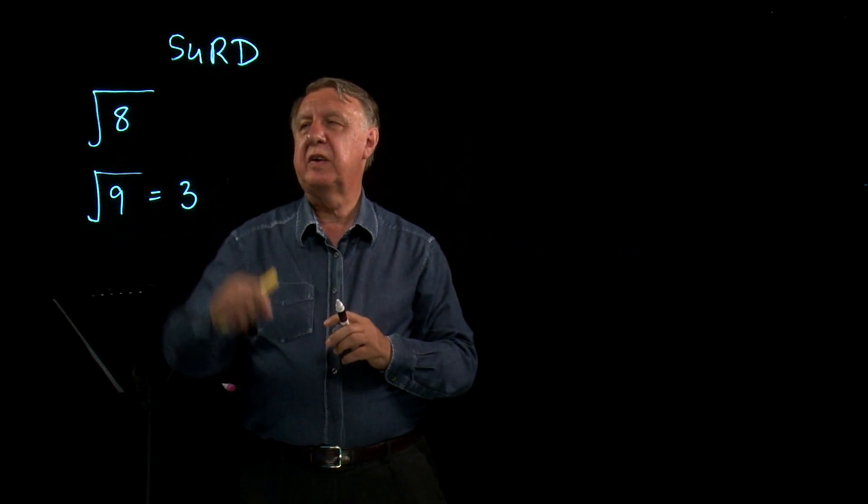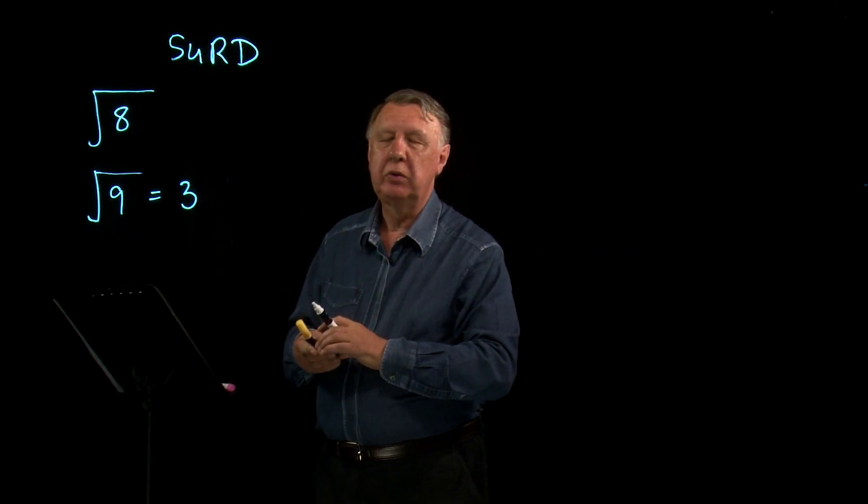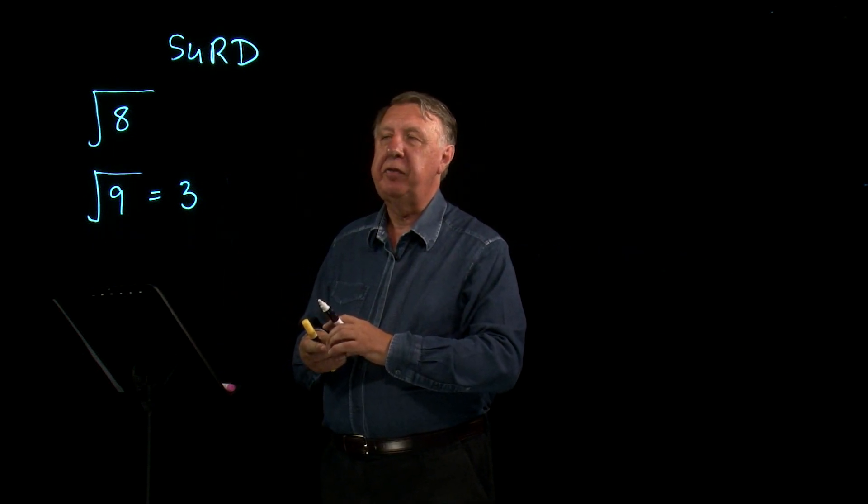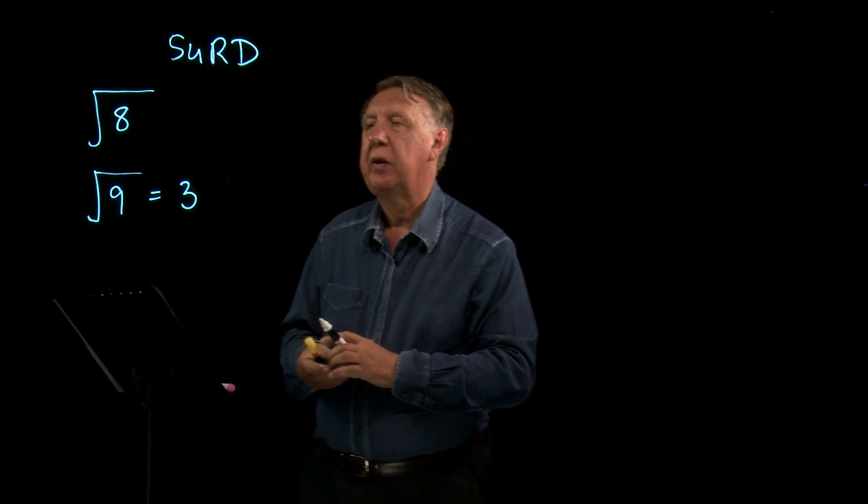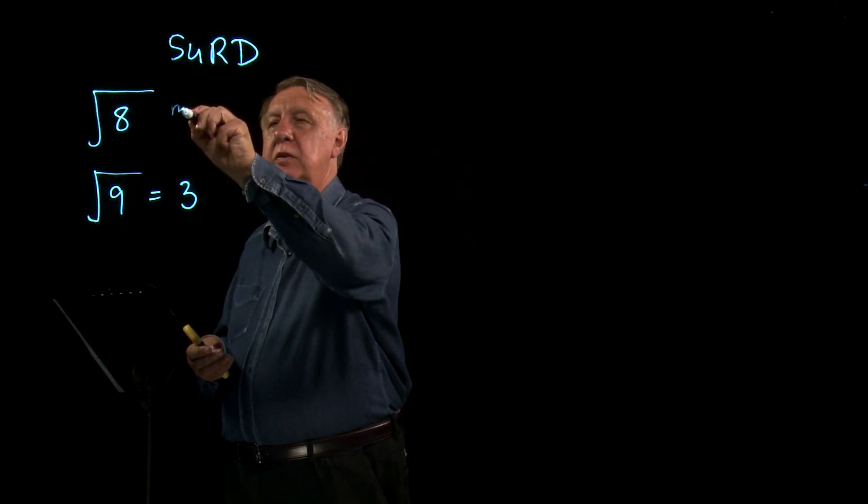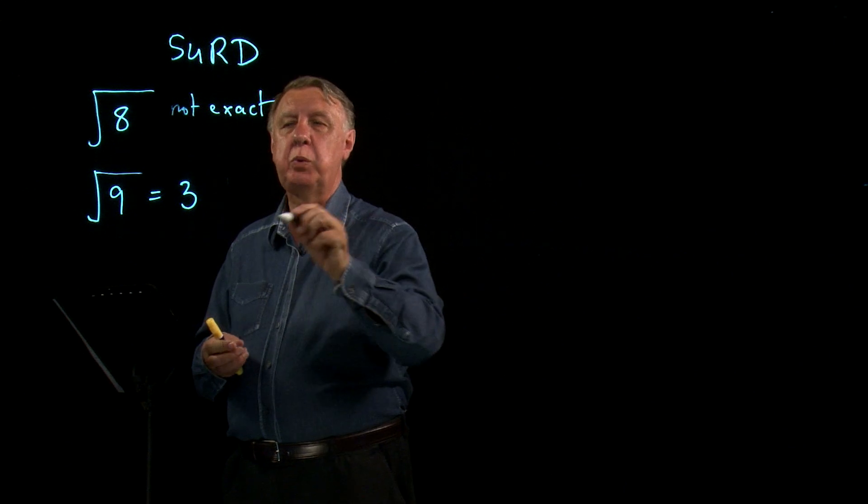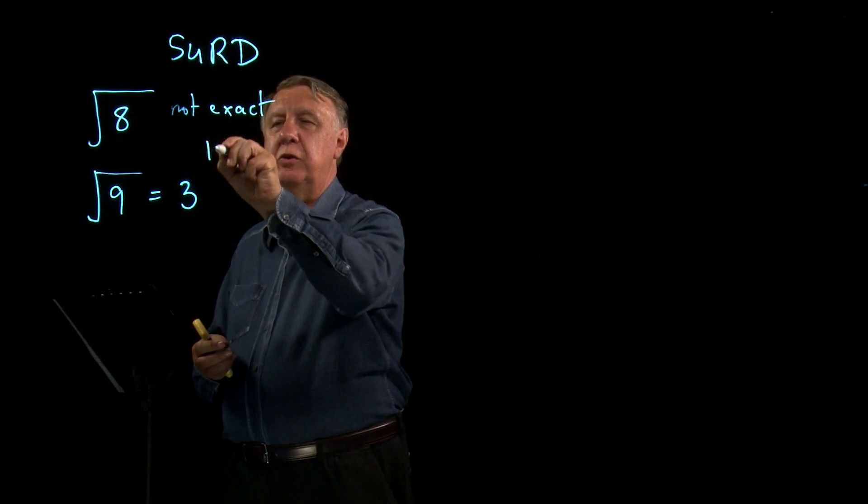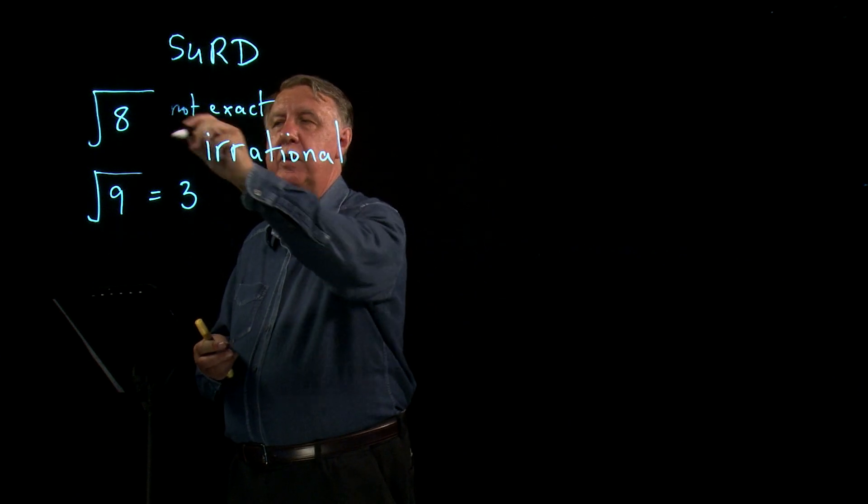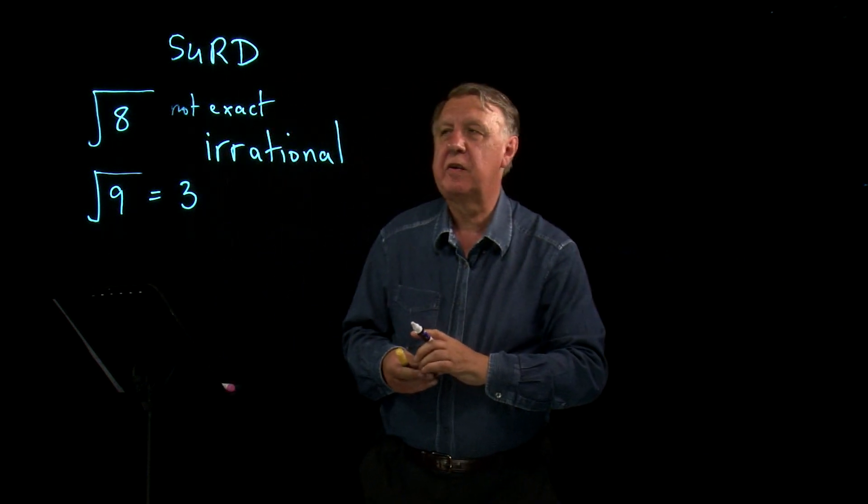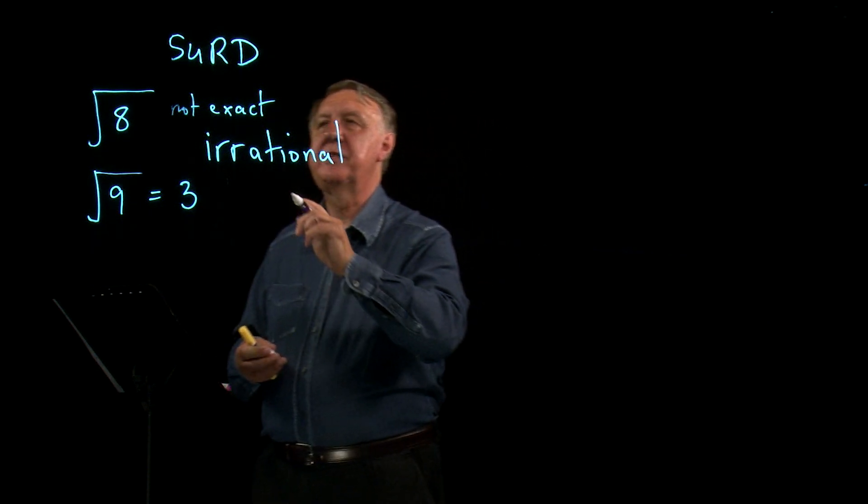However, the square root of 8, if you punch this into the calculator you'll get a long decimal, and if you looked very carefully at that decimal you would see that it doesn't repeat either. So it's not exact, and because it doesn't repeat it's what we call irrational. So the square root of 8 is an irrational number. It is SURD.